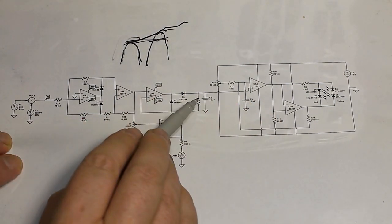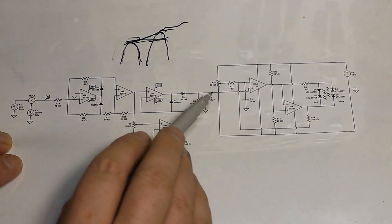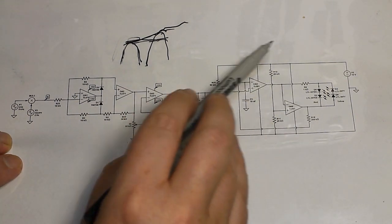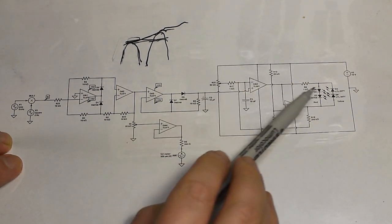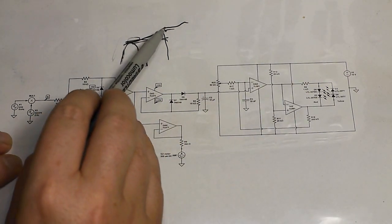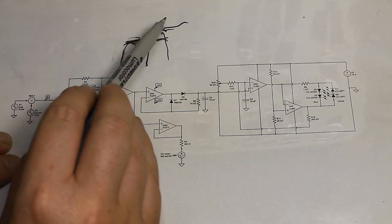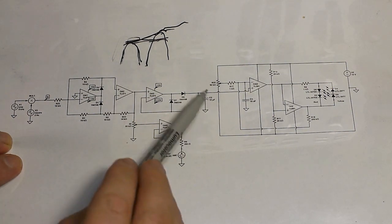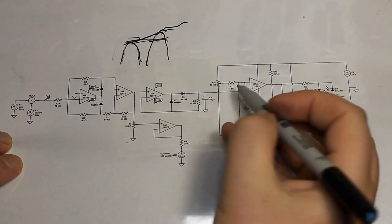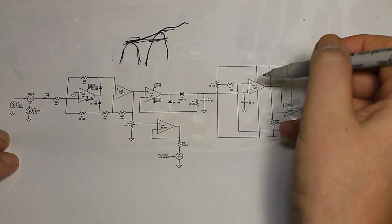Now the reason for that is because we want this comparator circuit here which is driving the LEDs to respond to the peak level, not to the average level. So that's the reason for putting this bit in here.